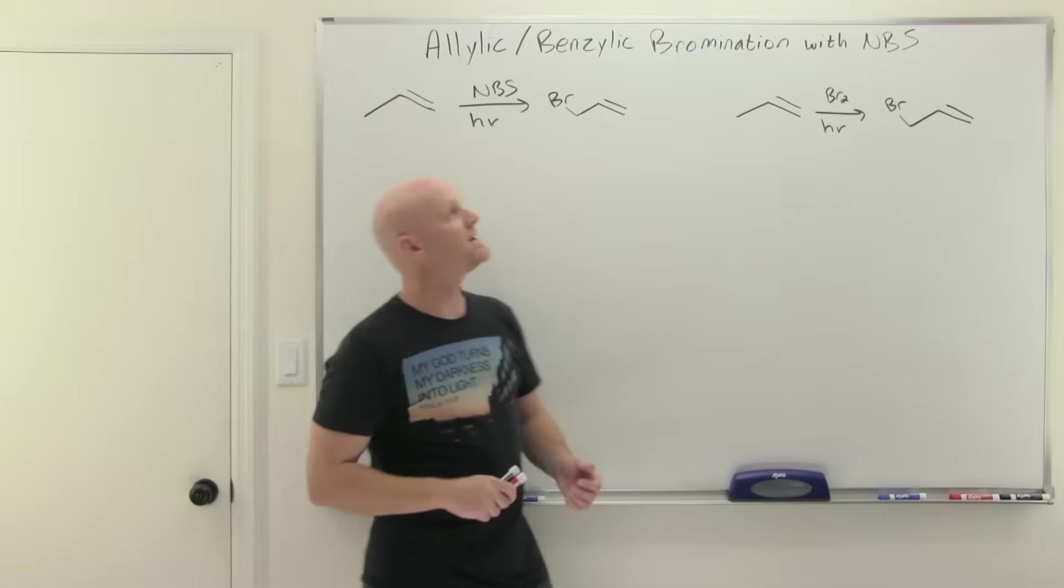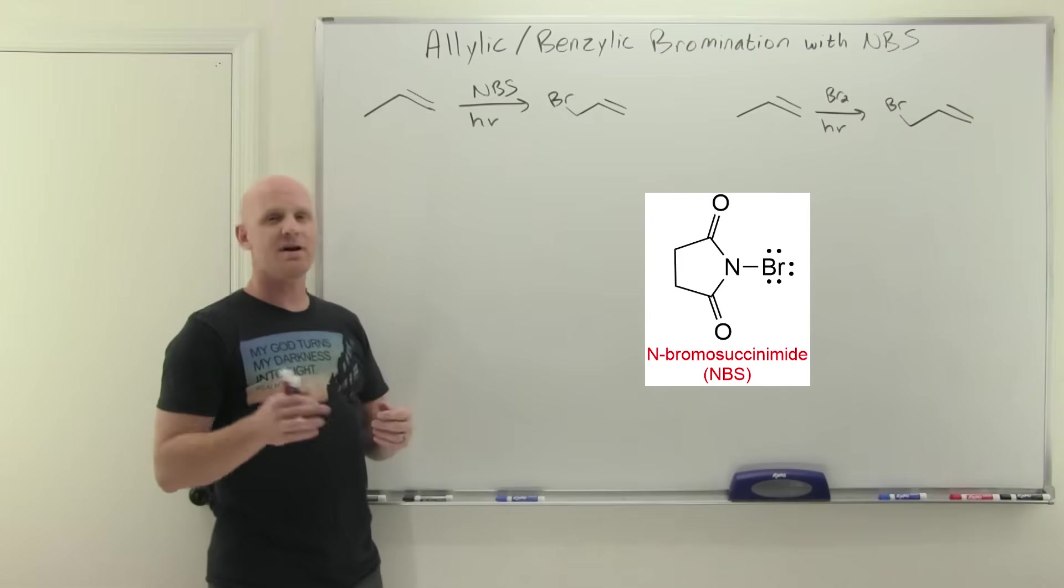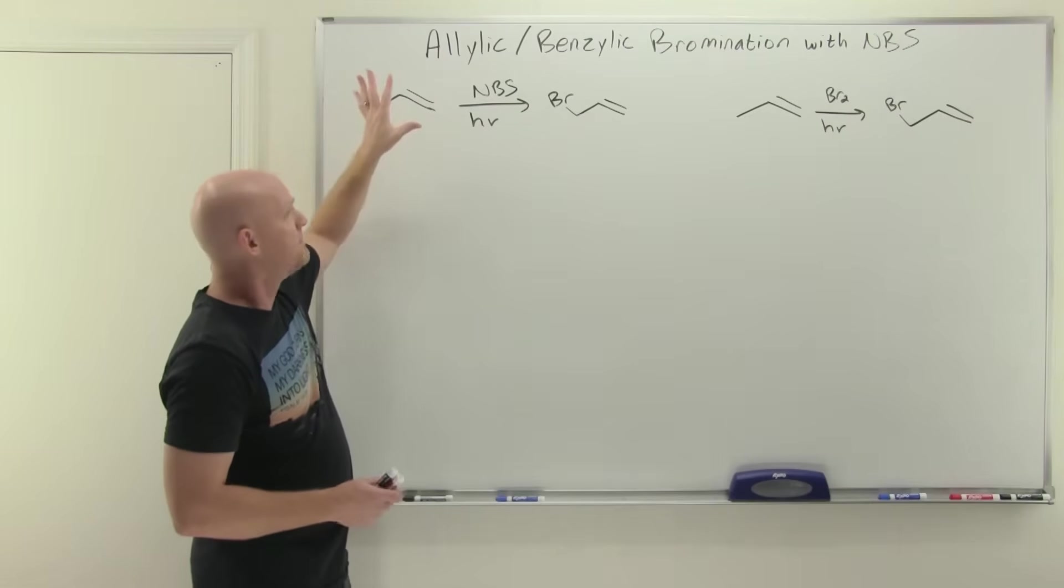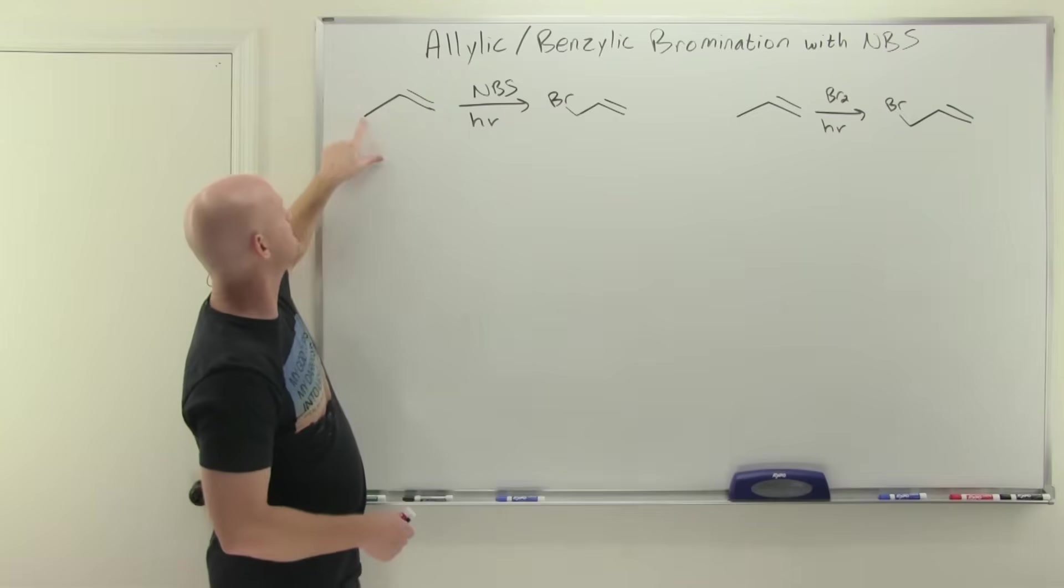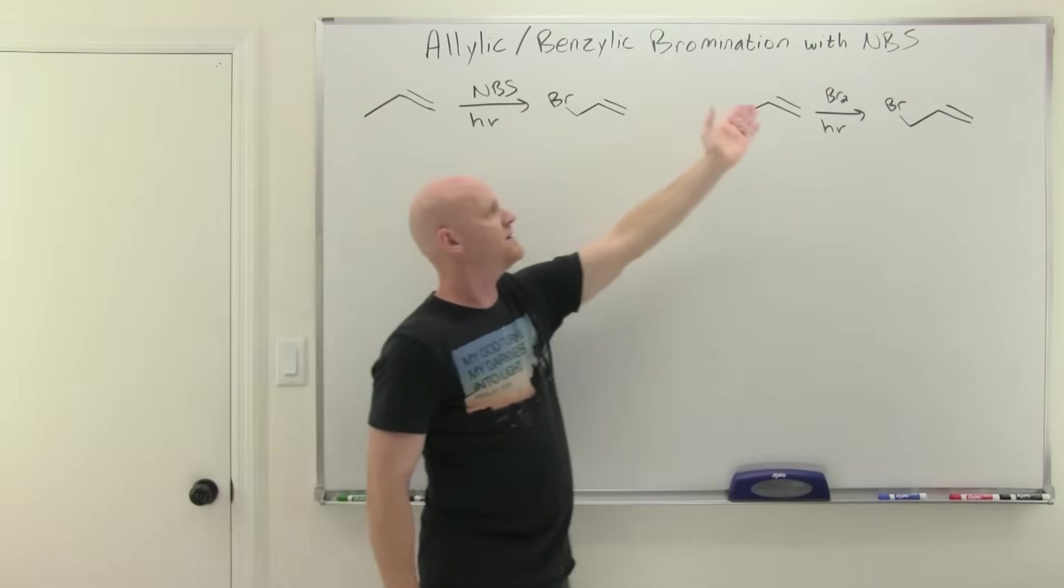All right, so using NBS. And NBS here is going to stand for N-bromosuccinimide. And we'll take a closer look at what that reagent looks like when we get to the mechanism here. But the idea is that if you are trying to brominate specifically on that allylic carbon here, then you should use NBS, not BR2.